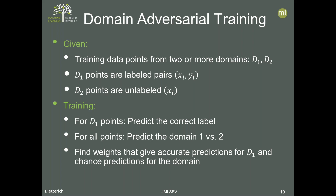We label all D1 points as belonging to hospital one and all D2 points as belonging to hospital two, and try to tell the difference. If we can tell those data apart, that's a strong signal that the distributions differ. But the key idea is: can we learn a hidden representation in which it is impossible to tell the difference between the hospitals? We want to do as well as possible predicting the correct label for D1, and do no better than random guessing at distinguishing D1 from D2.